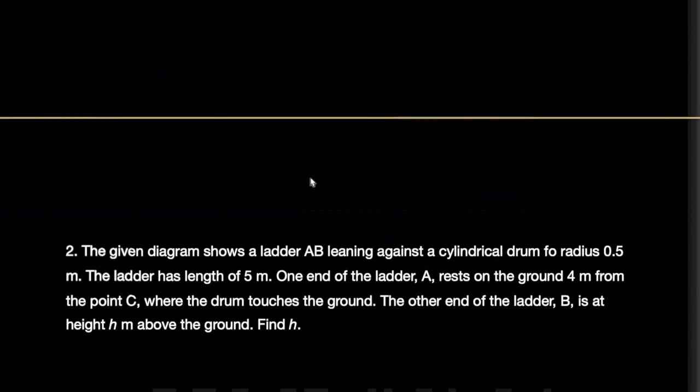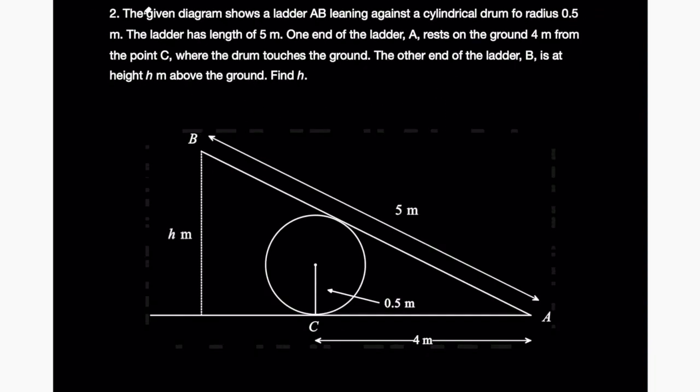On to the second problem. This question says the given diagram shows a ladder AB leaning against the cylindrical drum of radius 0.5 meters. The ladder has length 5 meters. One end of the ladder A rests on the ground 4 meters from the point C where the drum touches the ground. The other end of the ladder B is at height H meters above the ground, find H.